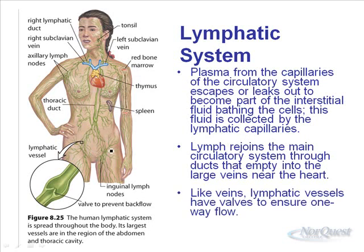Like veins, lymphatic vessels have valves to ensure one-way flow. Because there's no real pressure inside of lymph vessels, they have the same kind of one-way valves that allow for only one direction of flow for the extracellular fluid being returned to our heart. Here's the thymus — it's responsible for some white blood cell production. The thoracic duct, the position of the spleen, red bone marrow — we're not going to spend a lot of time worrying about these things.